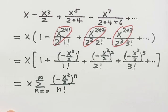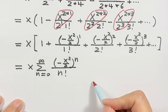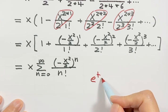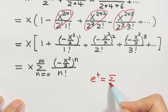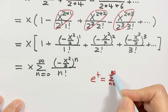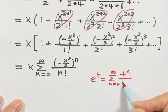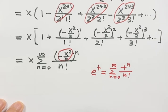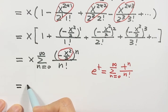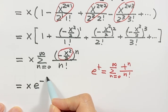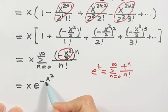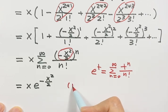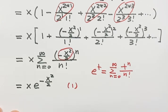So now we're going to use the Taylor series expansion: e to the power t equals the sum from n=0 to infinity of t to the power n over n factorial. For our case, t is negative x squared over 2, so the series equals e to the power t, and therefore the first part of the product equals x times e to the power t. This is the simplified expression for the first part.